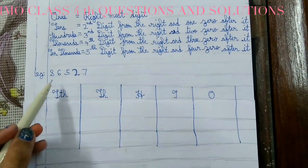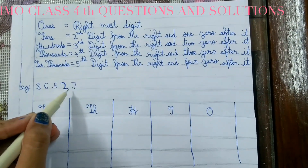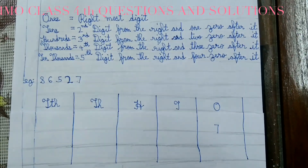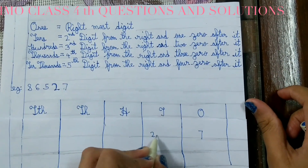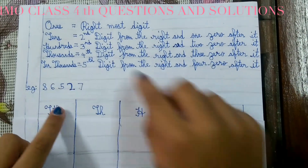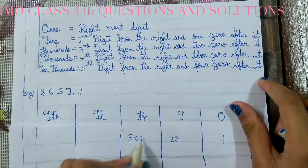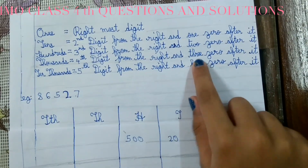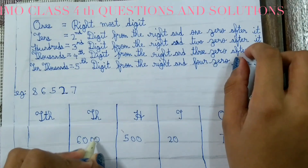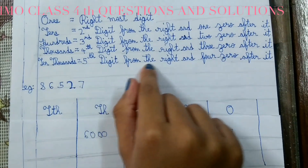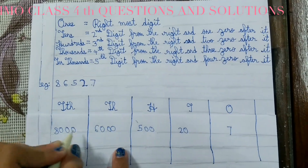Here is an example: 8, 6, 5, 2, 7. The rightmost digit is 7, so it comes in the ones column. 10 is the second digit from the right — here we have written 2 with one zero after. 100 is the third digit — it is 5 with two zeros after. 1000 is the fourth digit — it is 6 with three zeros after. 10,000 is the fifth digit — it is 8 with four zeros after it.